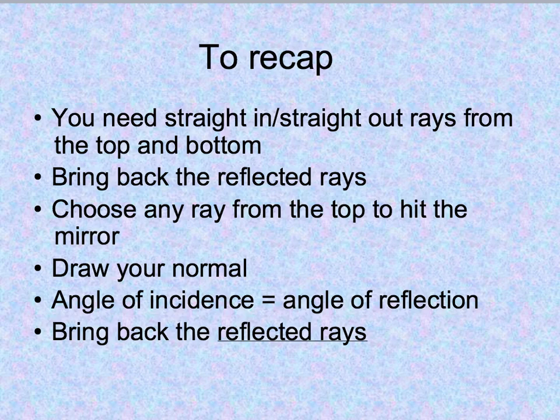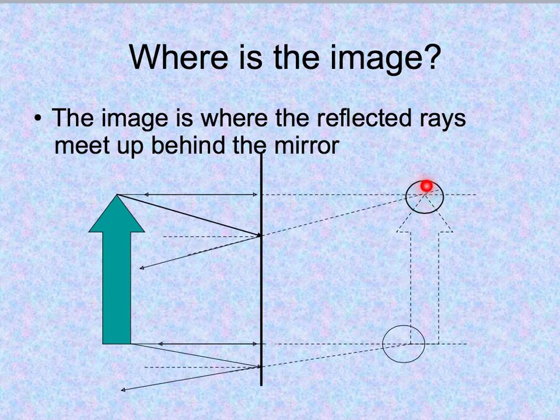Here's the rays you need, this is really what you should write down. You have your practice drawing, you're going to do another one in class. Take straight in straight out from the top and the bottom. Bring back your reflected rays which means bring them behind the mirror. Then choose any ray from the top, draw your normal. Your angle of incidence is going to equal your angle of reflection, that's your law of reflection. Then bring back the reflected rays. Where they meet up, that's where your image is. Where they meet up back here, that's where you're going to see an image of the bottom of the object and the top of the object. Everything else just fills in.